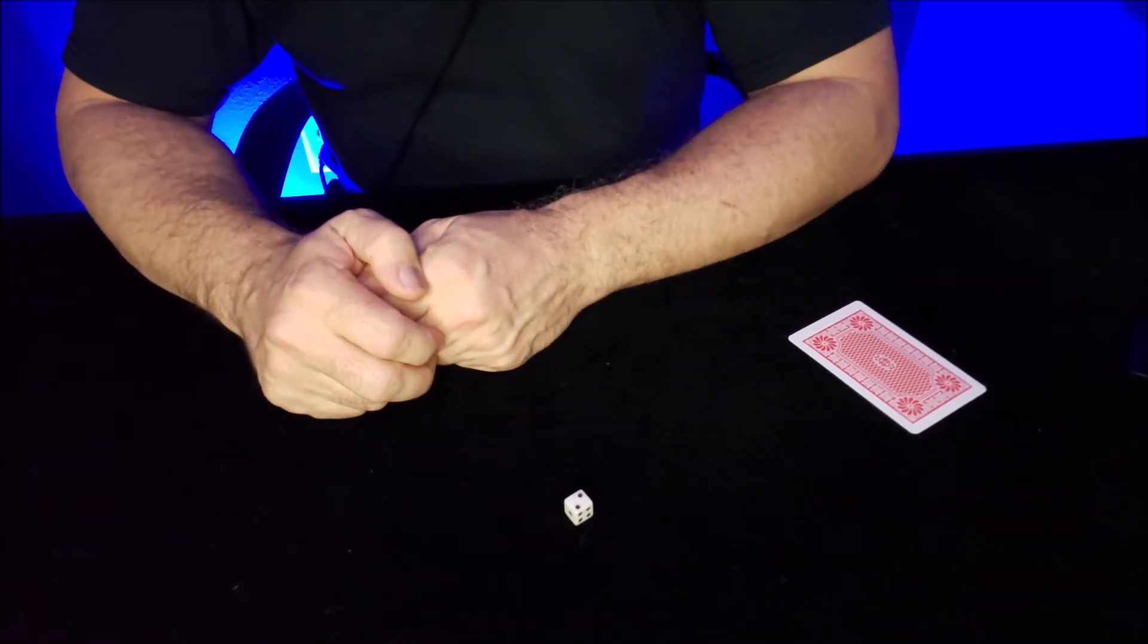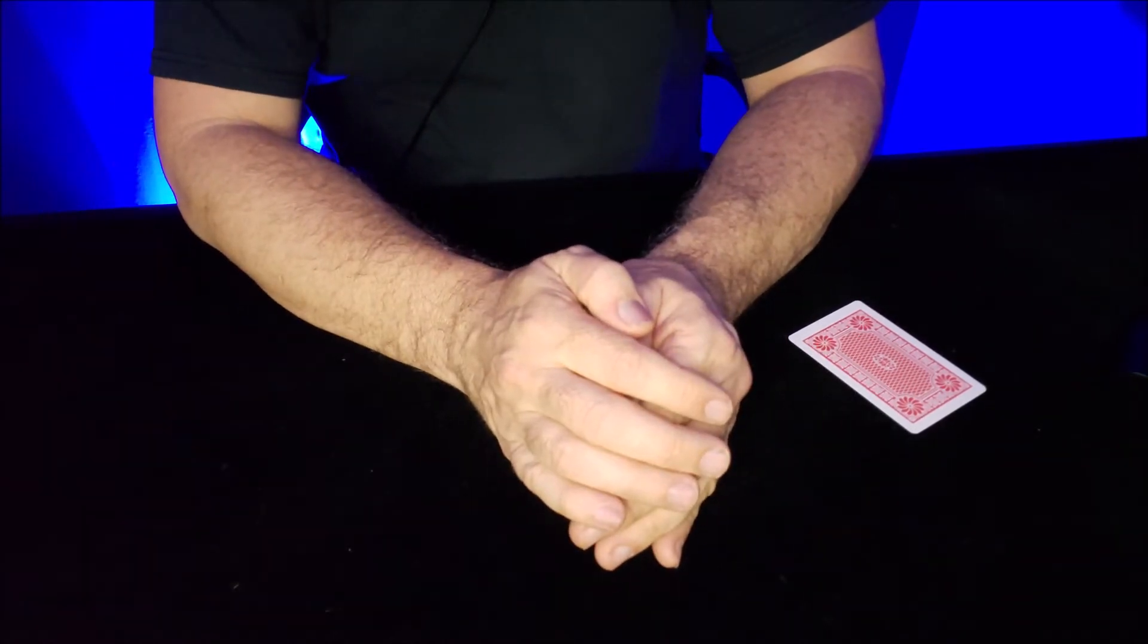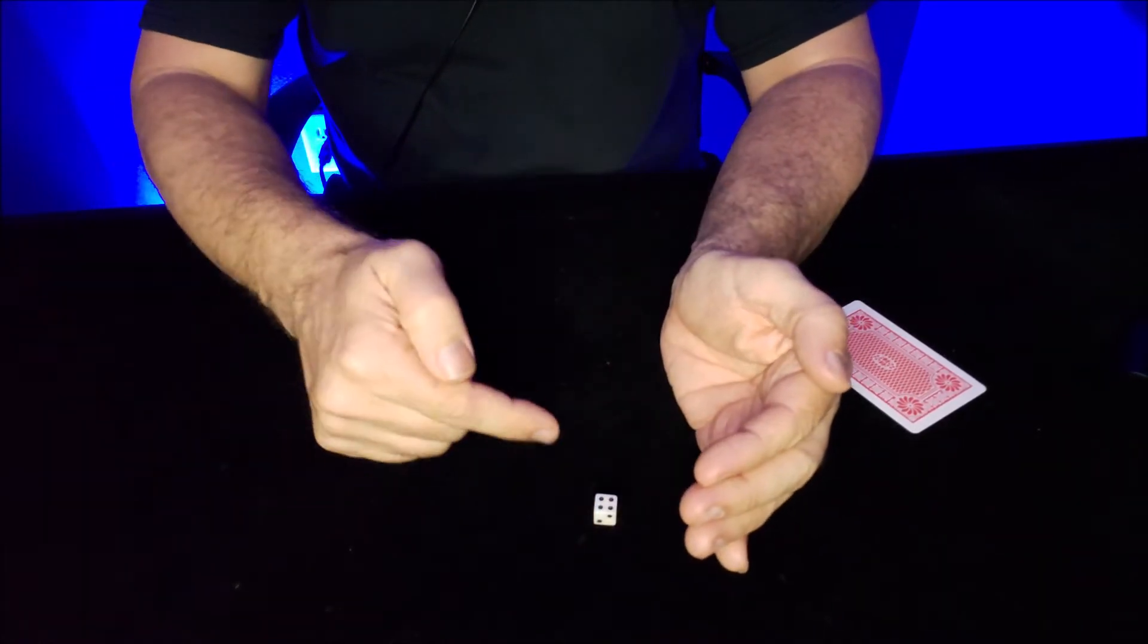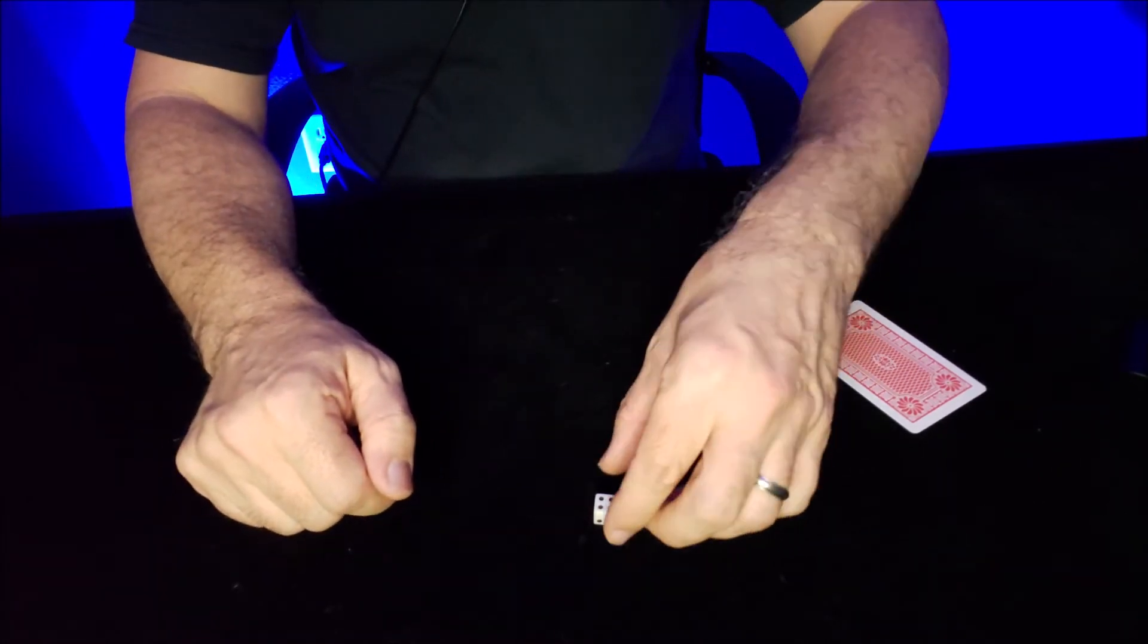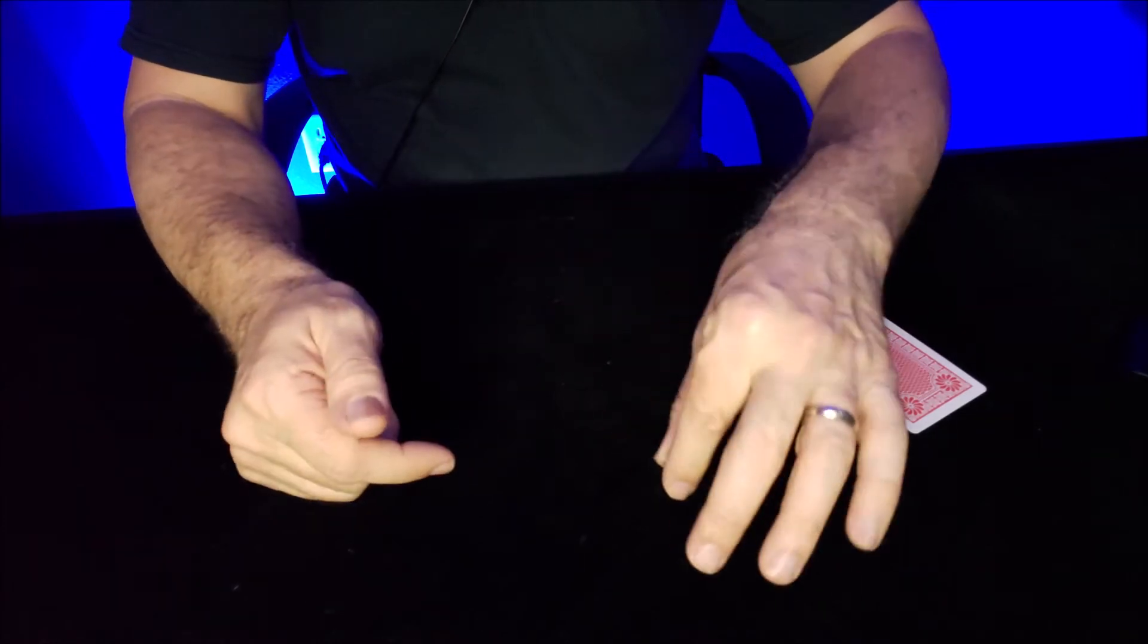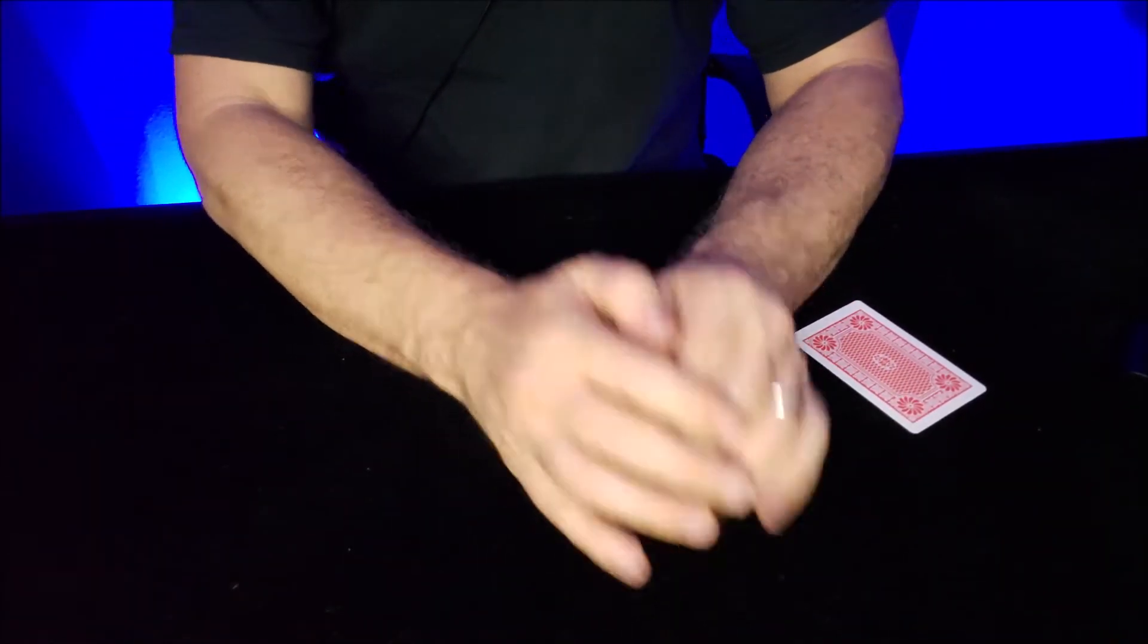What I want you to do is roll that die to a random place and cover it so I can't see. Then look at the number that's on the top, peek at the number on the bottom, and add those two numbers together. When I turn back around, leave it covered.